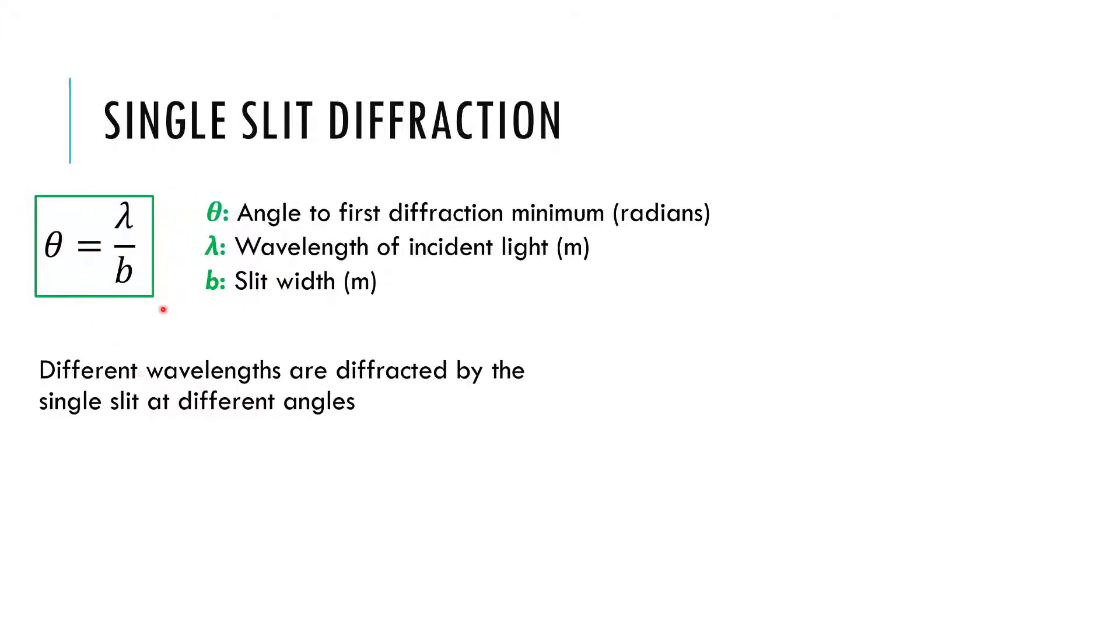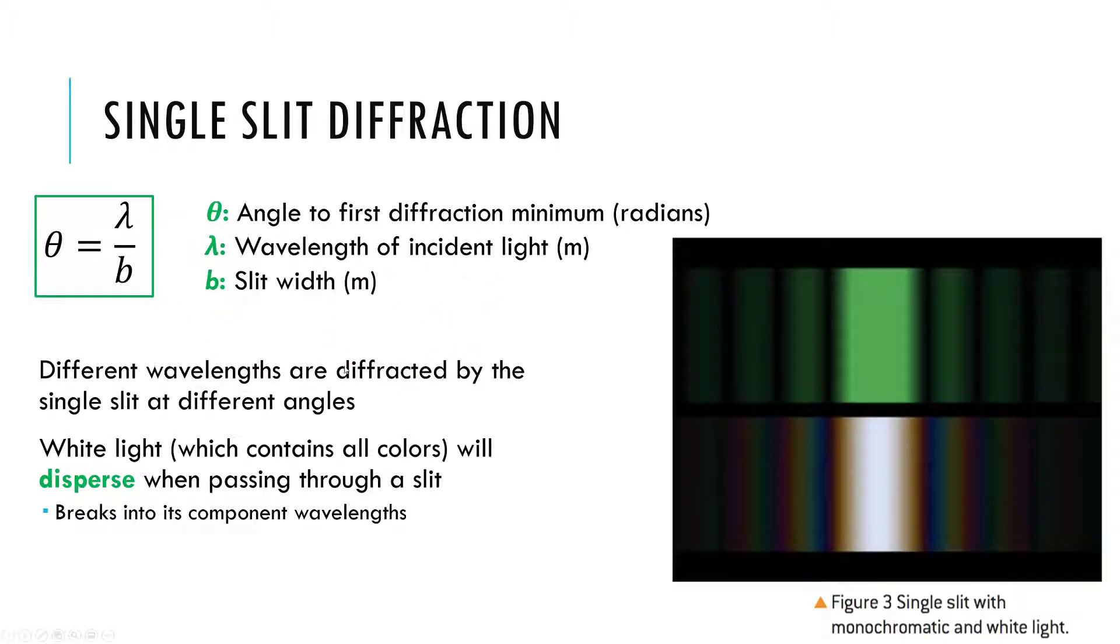The main thing this equation tells me, one concept that you want to be able to picture and think about here, is that the angle to that dark spot depends on the wavelength. So, different wavelengths will be diffracted at different angles. Red light will be spread out a different amount than blue light, and so on.